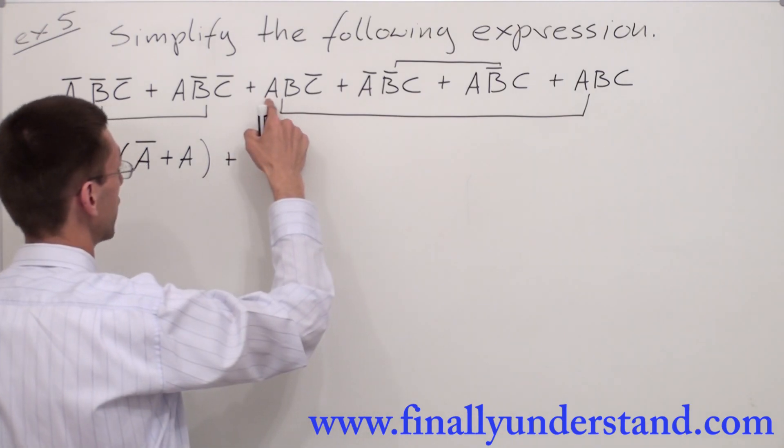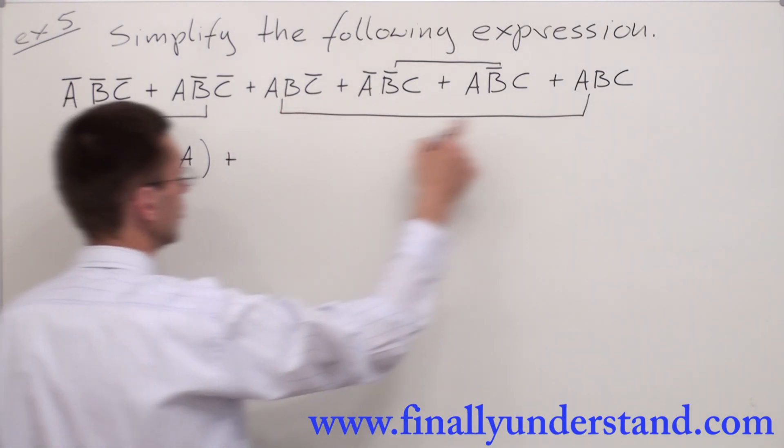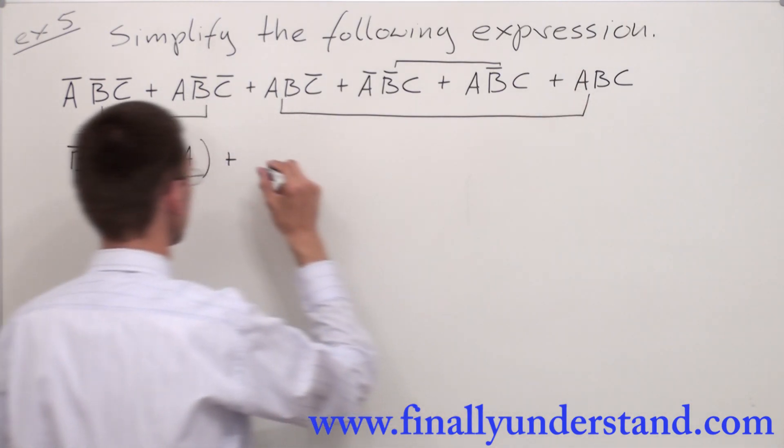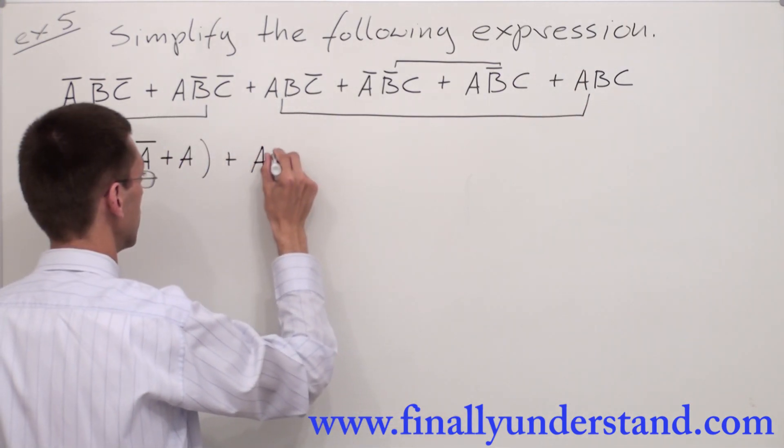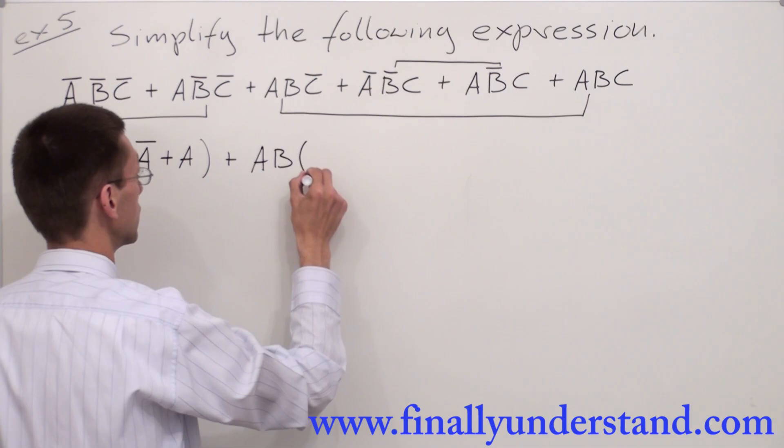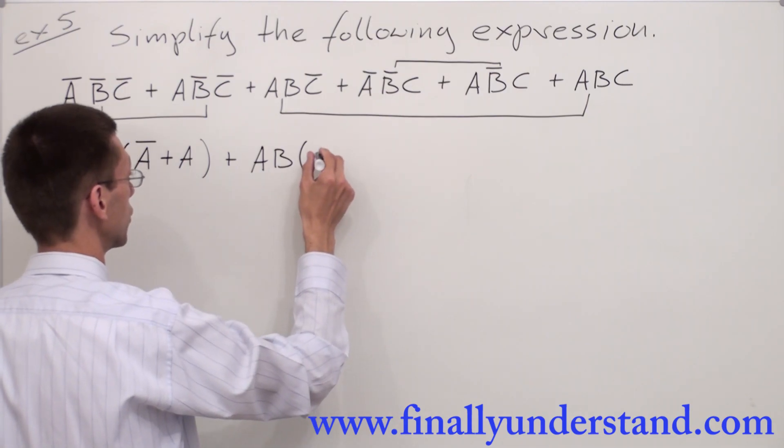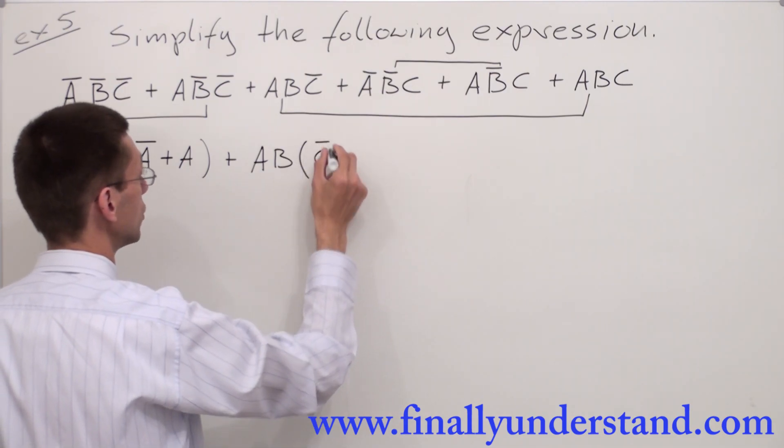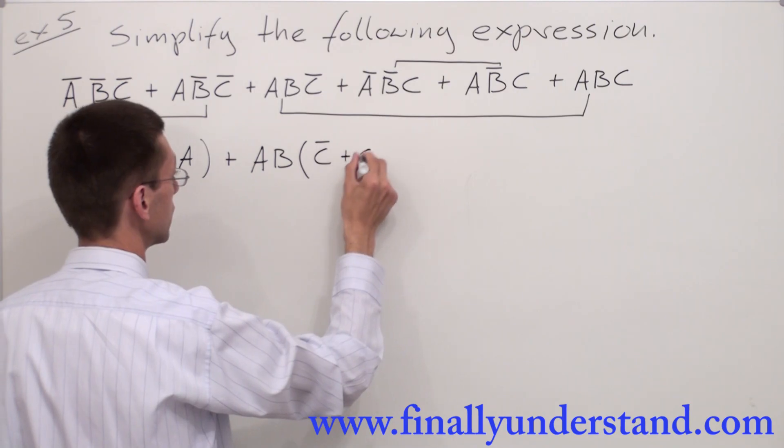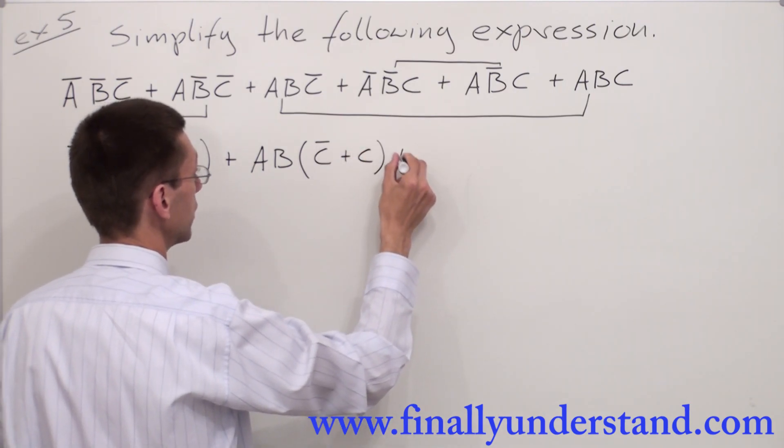Plus, we said we are going to factorize AB from here and AB from here. So I'm going to have AB on the front of the parenthesis and inside of the parenthesis I'm going to have C bar plus C.